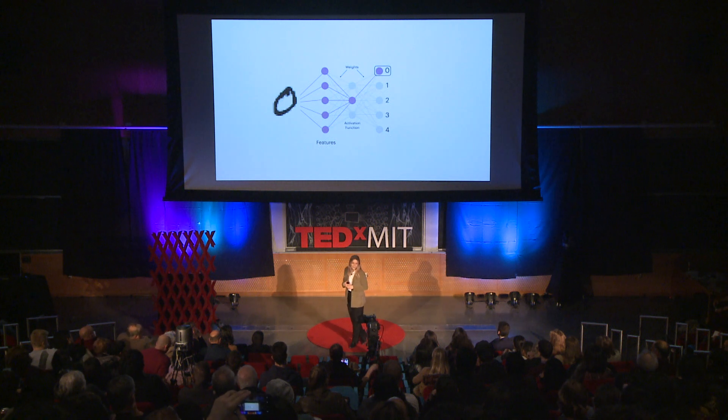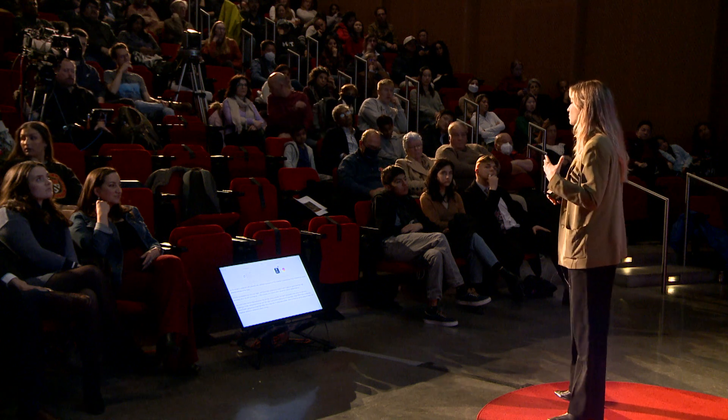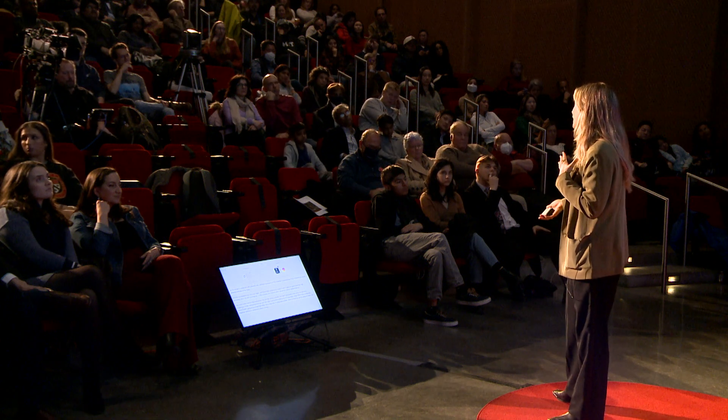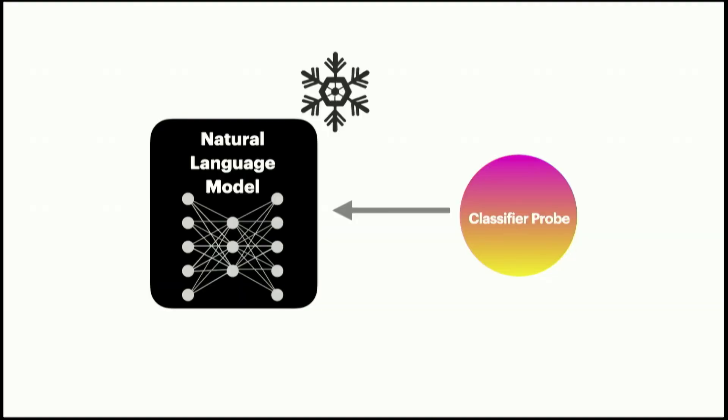What we're focusing on today is something closer to language models, where we might expect the meaningful representation to be whether a sentence is long or short. As you know, machine learning suffers from being a black box — we don't always know why an output is given. However, a couple years ago, something called probing was introduced for natural language models.